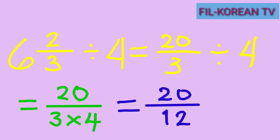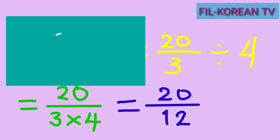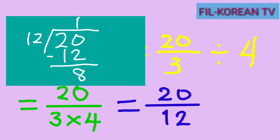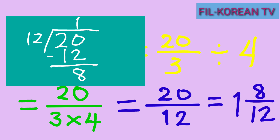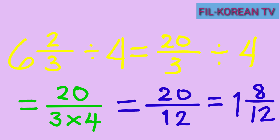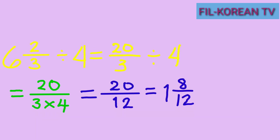We need to simplify it. Divide the numerator 20 by the denominator 12. 20 divided by 12 equals 1 with a remainder of 8. The quotient 1 is the whole number, the remainder 8 is the new numerator, and the divisor 12 is the denominator. The answer is 1 and 8 twelfths — but the fraction 8 twelfths can still be reduced.